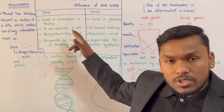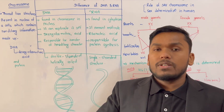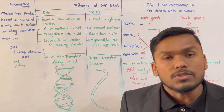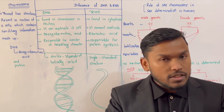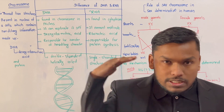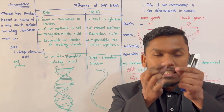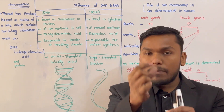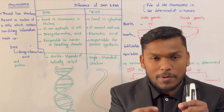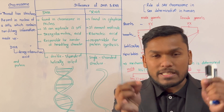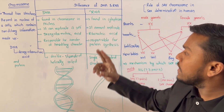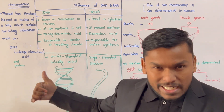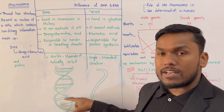DNA can replicate itself. DNA is present in the nucleus of the cell. DNA is a double-stranded helix structure, while RNA is single-stranded.